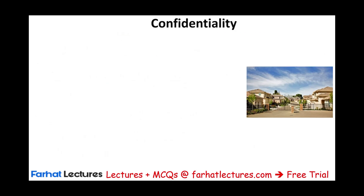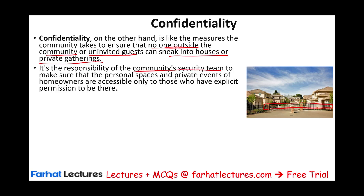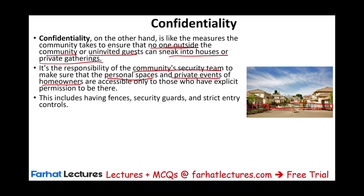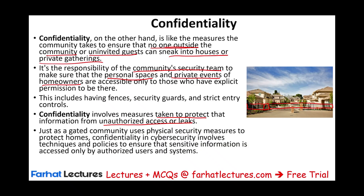Confidentiality, on the other hand, is like the measures the community takes to ensure that no one outside the community or uninvited guests can sneak into their houses or private gatherings. Confidentiality is that gate the community installs to protect this information. It's the responsibility of the community security team to make sure that personal spaces and private events are accessible only to those who have explicit permission. This includes fences, security cameras, and strict entry controls. Confidentiality involves measures taken to protect information from unauthorized access or leaks, just as a gated community uses physical security measures to protect homes.